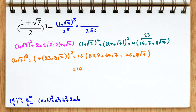If we simplify, it will be 16 times 529 plus 64 times 7, which is 448, plus 368 root 7. Calculating: 16 times 529 gives us the constant term, and we have 368 root 7.